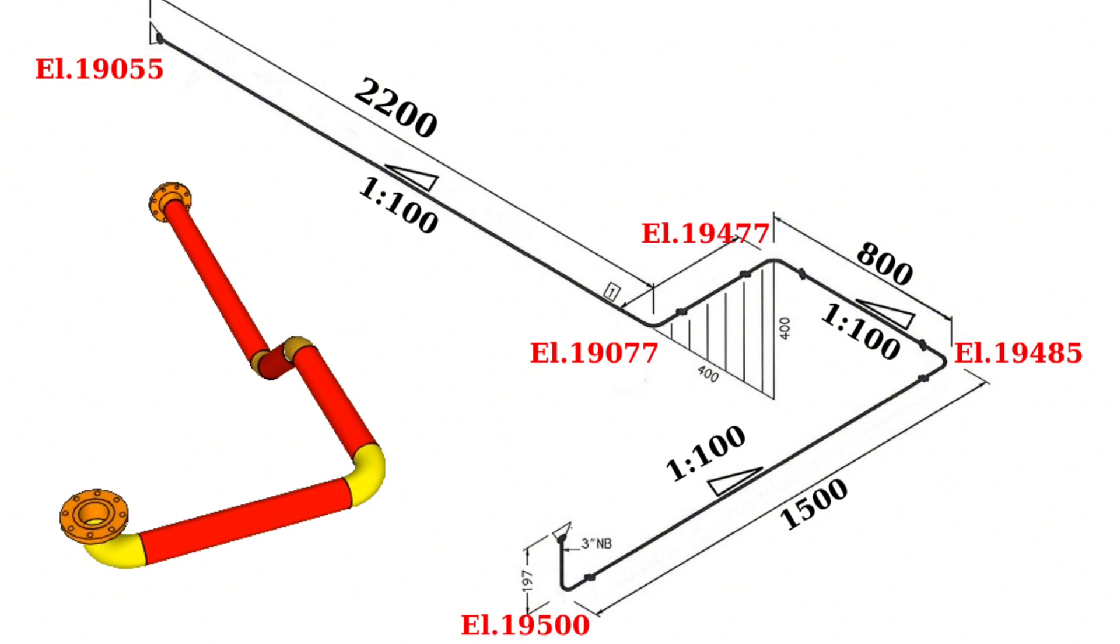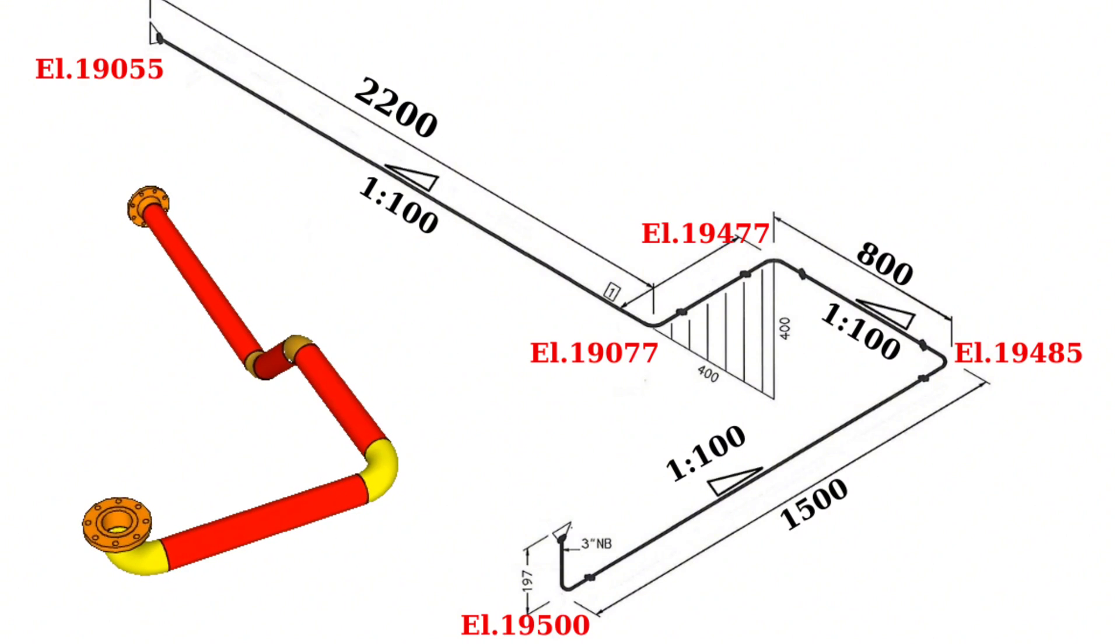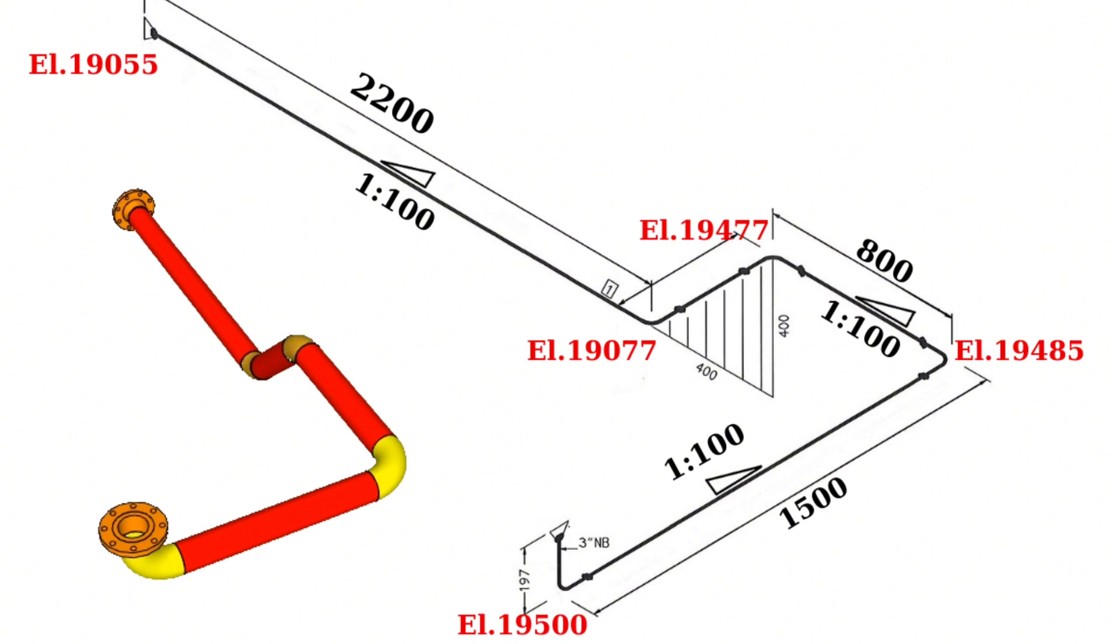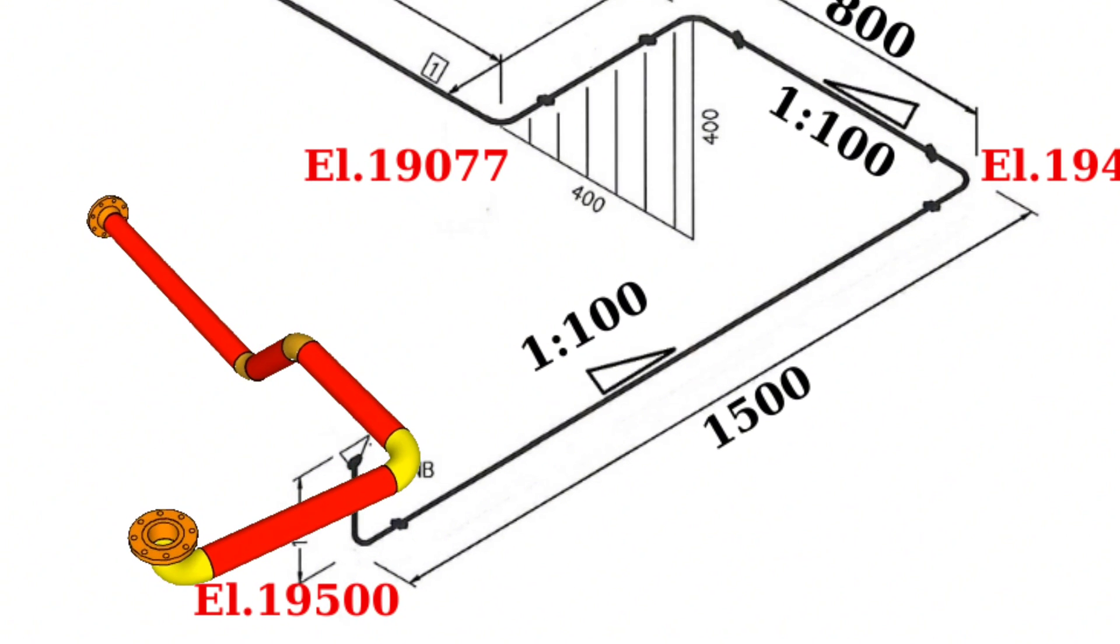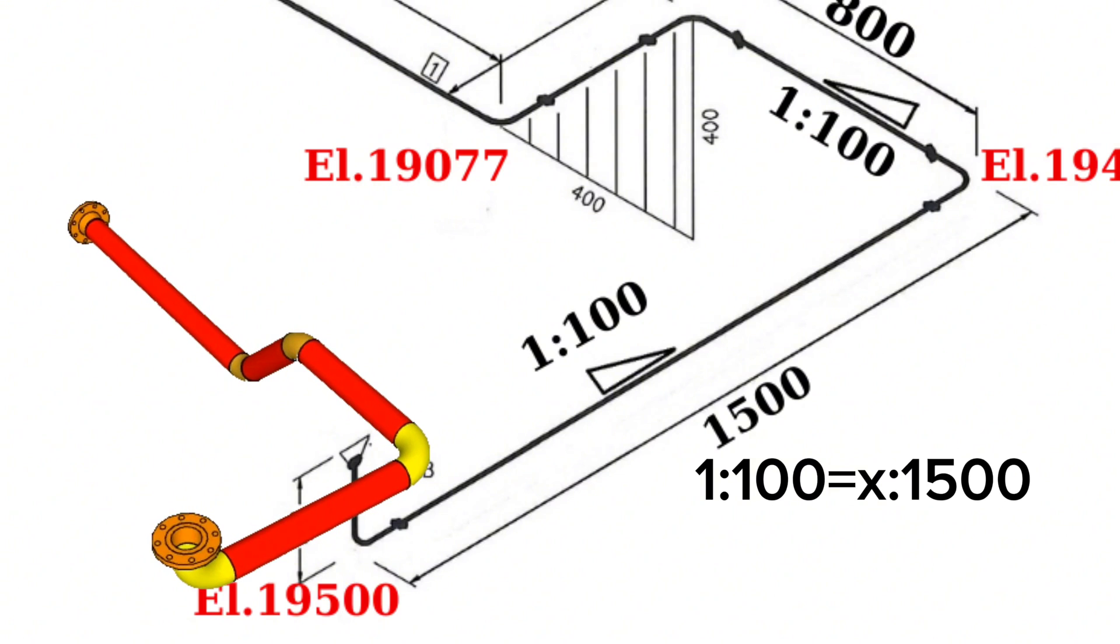Let's calculate with slope ratio in this example. In this pipe isometric drawing, the slope at a horizontal distance of 1,500 is expressed as a ratio of 1 to 100. 1 to 100 ratio equals x to 1500 ratio.